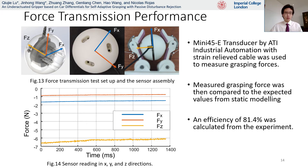A Mini45E transducer by ATI was used to measure the grasping forces, and the experimental setup is shown on this figure. The measured grasping forces shown on a graph are then compared to the expected forces calculated from the static modelling, and an overall force transmission efficiency of 81.4% was found from the result.